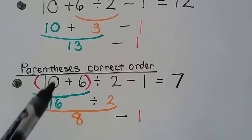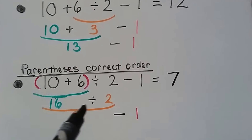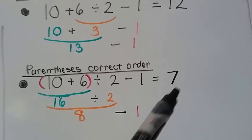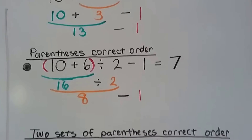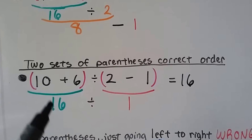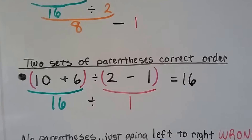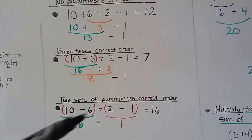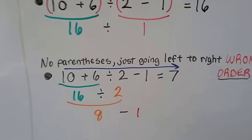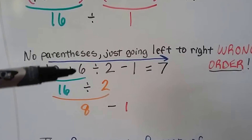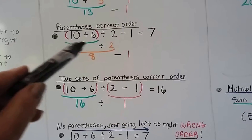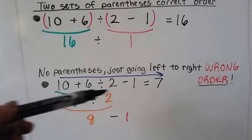If there were parentheses, we would do inside first: 10 plus 6 is 16, skip exponents and multiplication, then 16 divided by 2 is 8, subtract 1 to get 7. With two sets of parentheses you could do 10+6=16 and 2-1=1, then 16 divided by 1 equals 16. Depending on whether there are no parentheses, one set, or two sets, we get three different answers — that's why it's so important to follow the rule.